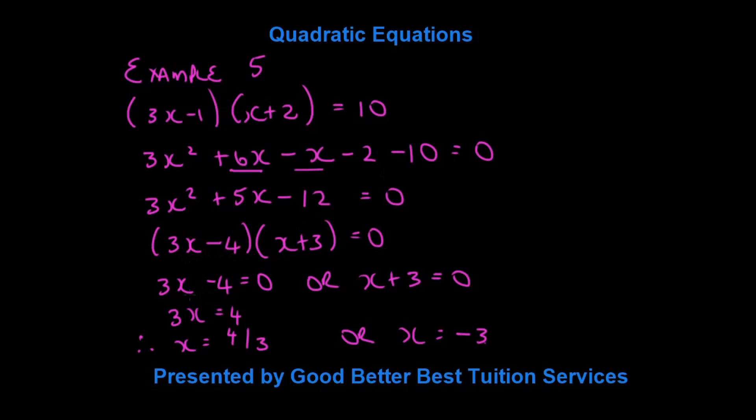And we split our brackets, 3x minus 4 is equal to 0, or x plus 3 is equal to 0. So x is equal to 4 over 3, or x is equal to negative 3.